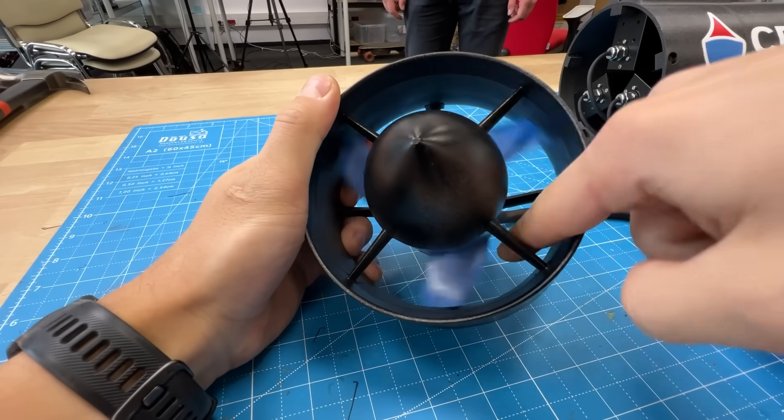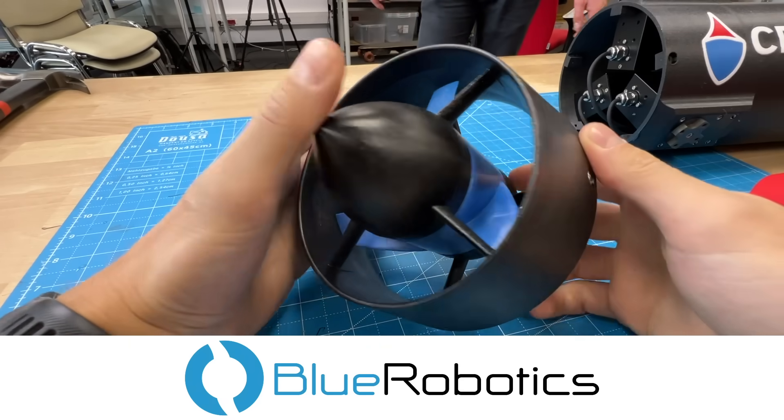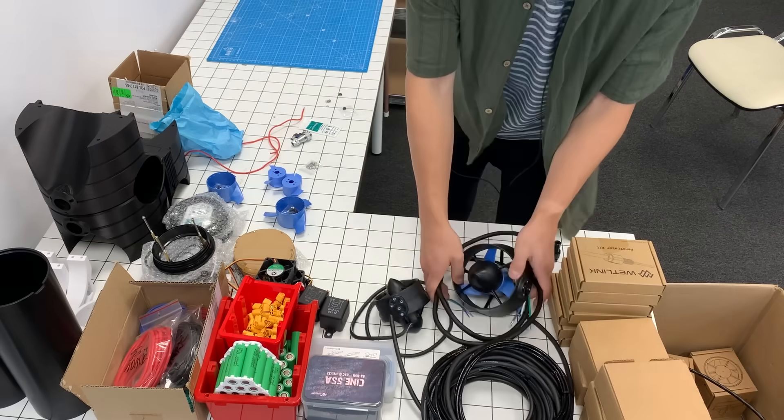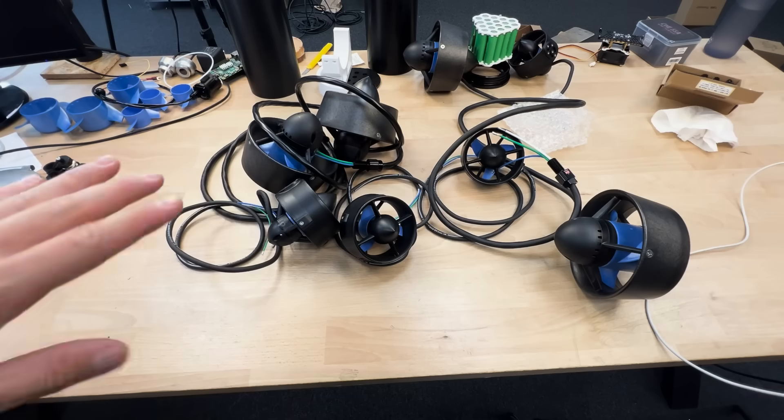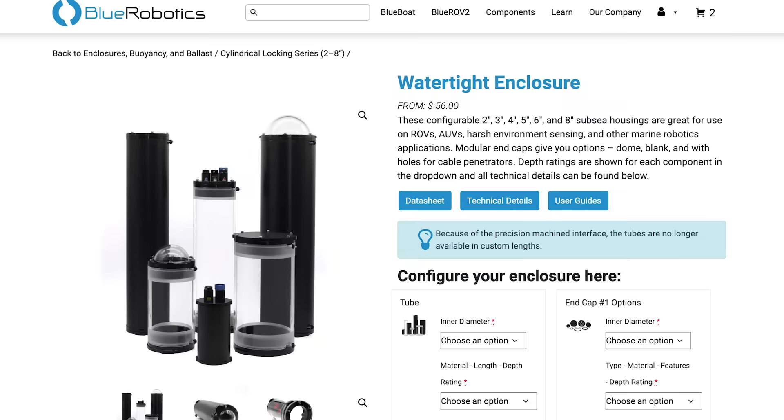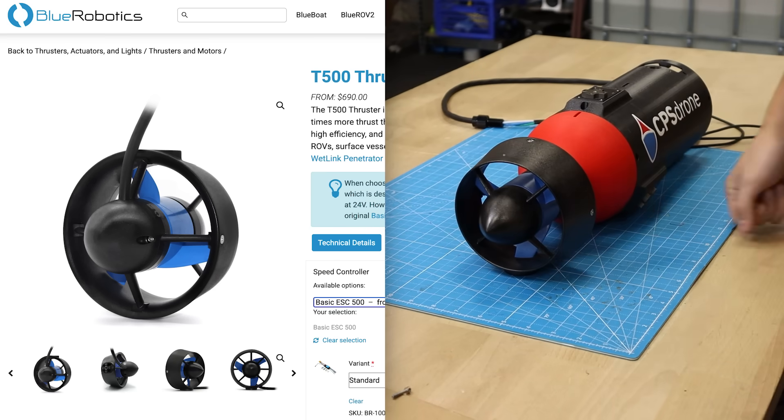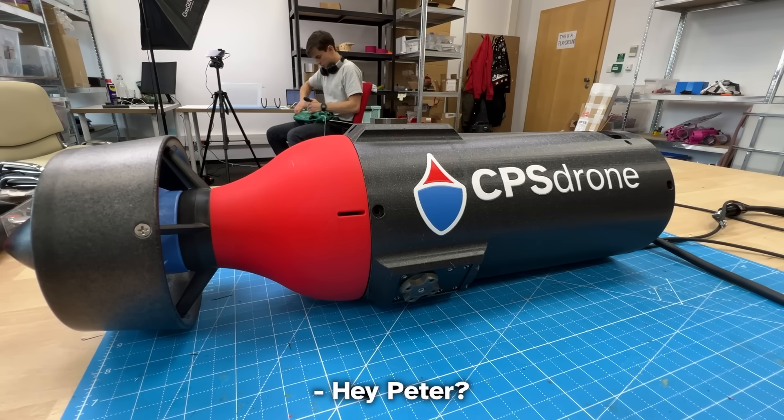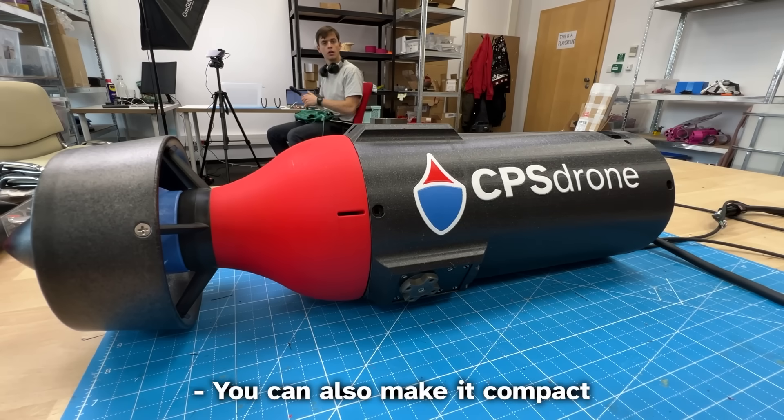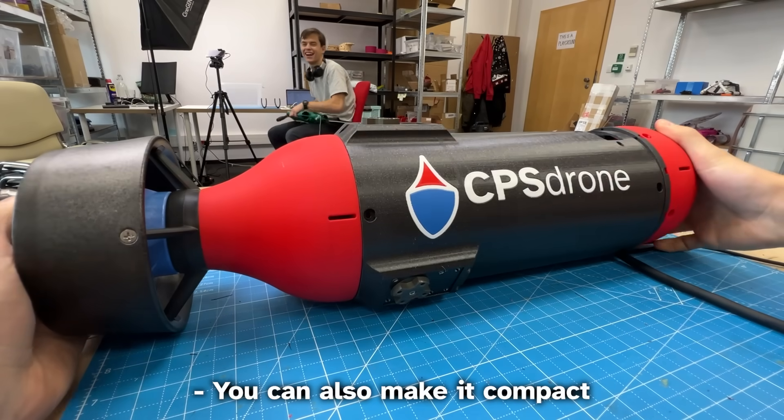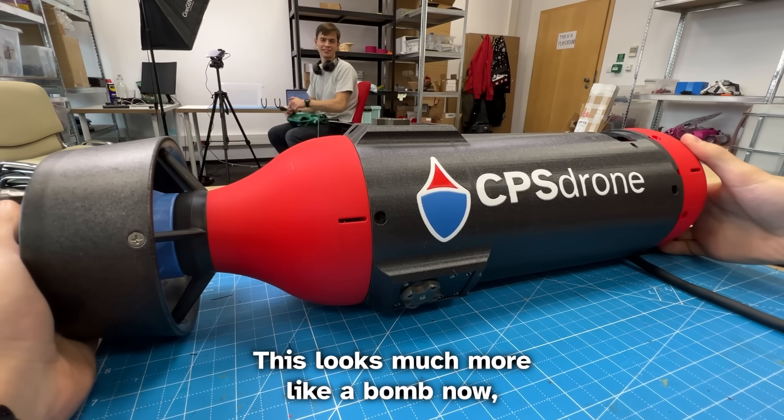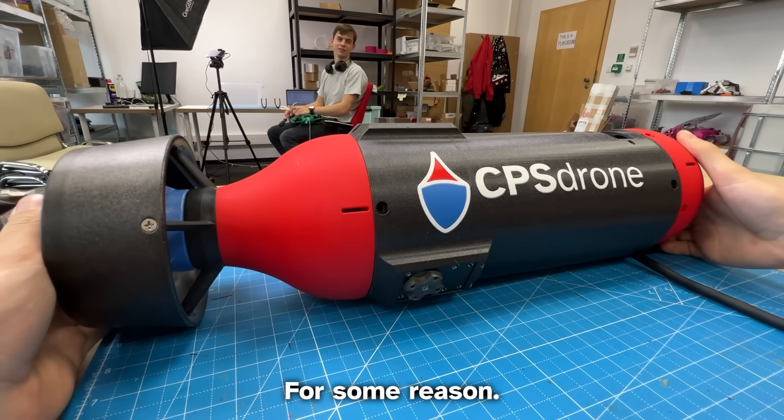We'll propel the drone with this big thruster from Blue Robotics. They sell a lot of components for underwater drones with very good quality. For example, these motors, enclosures, or penetrators for cables. We even linked this T-500 thruster in the description if you'd like to buy it yourself. It's an affiliate link. And Peter? Yes? You can also make it compact. But this looks much more like a bomb now, for some reason.